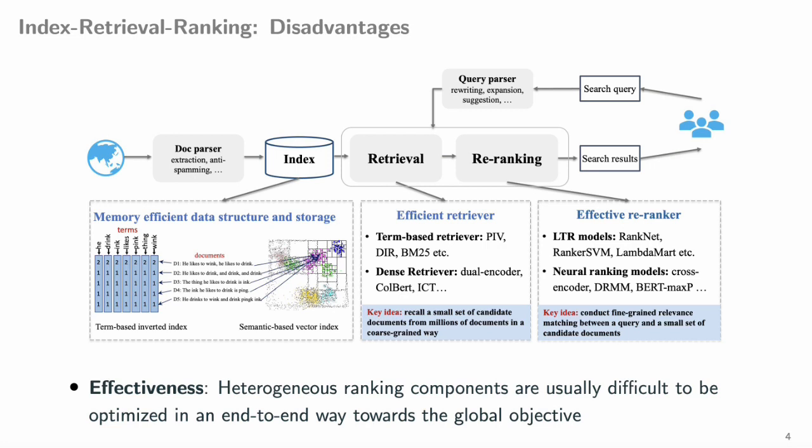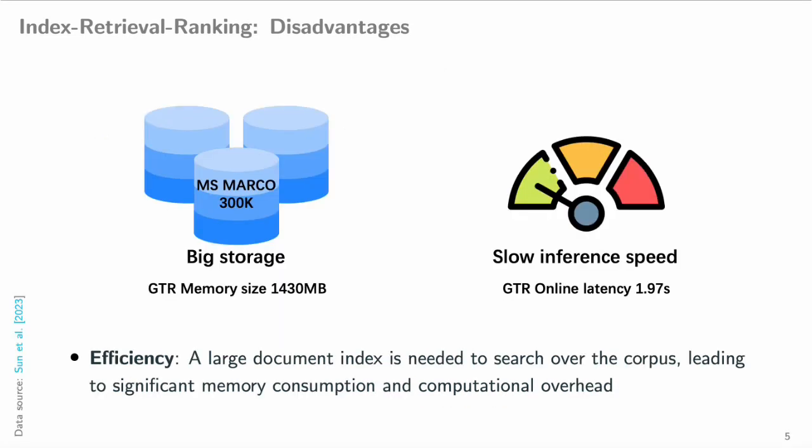Despite its wide usage, this pipeline paradigm has several limitations. Firstly, heterogeneous ranking components are usually difficult to optimize in an end-to-end way towards a global objective. Secondly, a large document index is needed to search over the corpus, leading to significant memory consumption and compositional overhead.